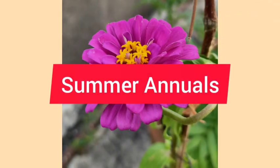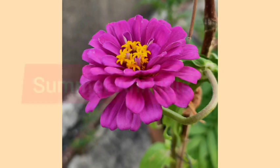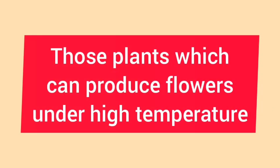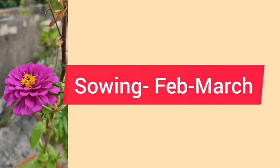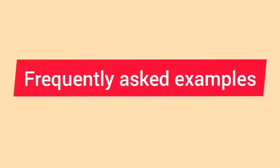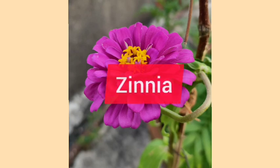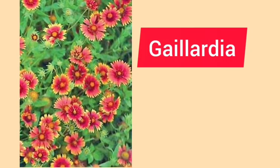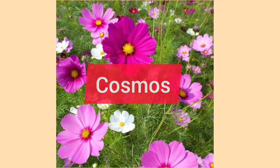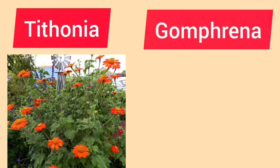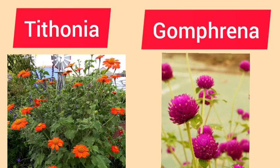Summer annuals. In this picture, you can see one of the summer annuals. Summer annuals are those plants which can produce flowers under high temperature. The sowing of summer annuals is done in February to March. Examples that are frequently asked: Zinnia, Portulaca, Gaillardia (also known as blanket flower), Cosmos, Tithonia, and Gomphrena — which has globe-like flowers.